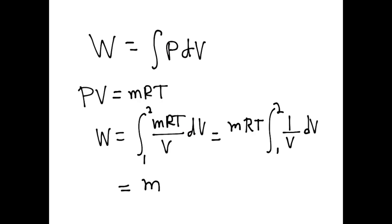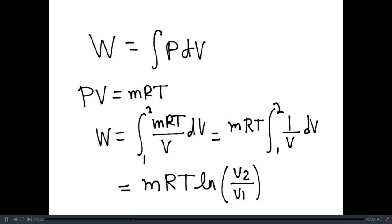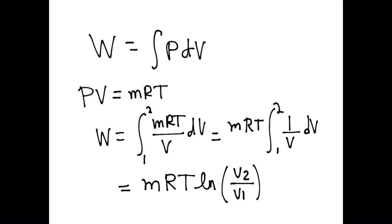So the work is going to be mass times the constant times the temperature times the natural logarithm of V2 over V1. Once again, if V2 is bigger than V1, then the natural logarithm is positive, which means this is expansion.